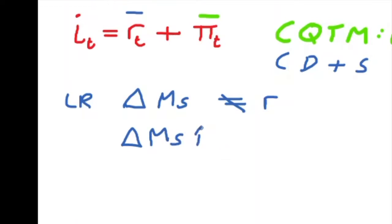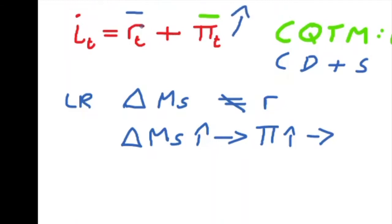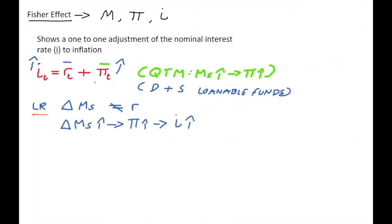If money supply doesn't impact the real interest rate, it must be driving inflation. When money supply increases, this increases the inflation rate. Through the Fisher effect, because there's no impact on the real interest rate, the real interest rate stays the same and it is the nominal interest rate that increases. So in the long run, money supply is the major determinant of both inflation and increases in the nominal interest rate.